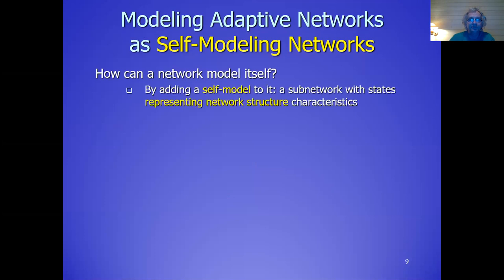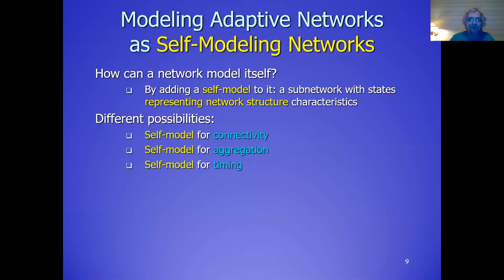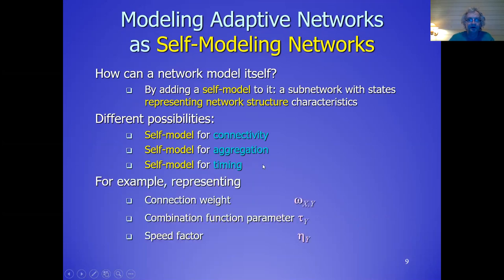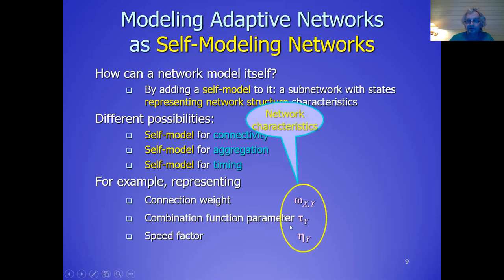How can a network model itself? You add a self-model to it — a sub-network with states representing the network structure characteristics. You can have characteristics for the connectivity, characteristics for the aggregation, or for the timing. For example, this connection weight, or this parameter for excitability threshold, or the speed factor — these are characteristics. You add states for them as a kind of small copy, and add it to the network model. So these are the self-model states.